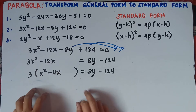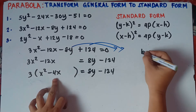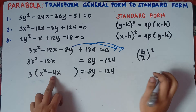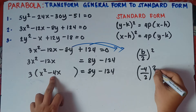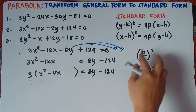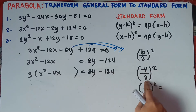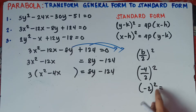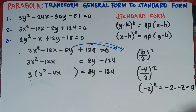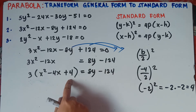Next is completing the square. We need to add a new constant inside the parenthesis. The formula is (B/2)², where B is the coefficient beside x, the linear term. Here B = -4, so (-4 ÷ 2)² = (-2)² = (-2) × (-2) = positive 4. So we will add 4 inside the parenthesis on the left side of the equation.